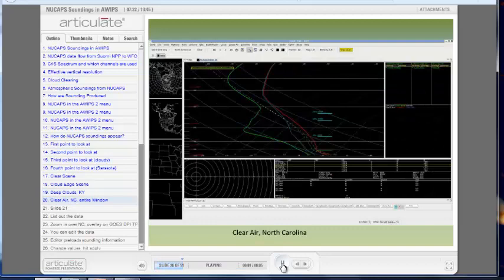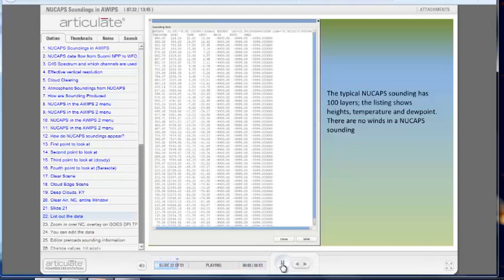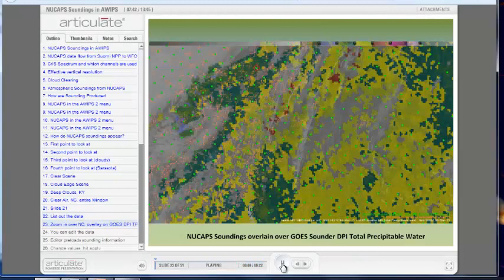The N-Sharp sounding display includes methods to edit or display the data. For example, click on Show Text to see values. This will open a window that includes NuCAP sounding data at the defined levels, the lower part of the atmosphere of those 100 levels. Pressure, height, temperature, and dew point are shown. There are no winds.